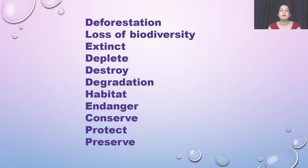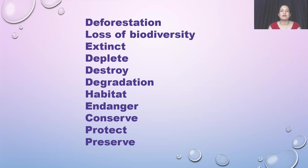Next is 'deplete' — when a resource is no longer available, it is depleted. For example, depletion of resources: we are using fossil fuel a lot. Fossil fuel is the remains of living organisms from which fuel has been made. Crude oil, petrol, and diesel are byproducts of crude oil, which is an outcome of fossil fuel. 'Destroy' means destruction, vanish, finish. 'Degradation' means decreasing the quality — the opposite of improvement. 'Deteriorate' is similar. So we use the term 'environmental degradation.'